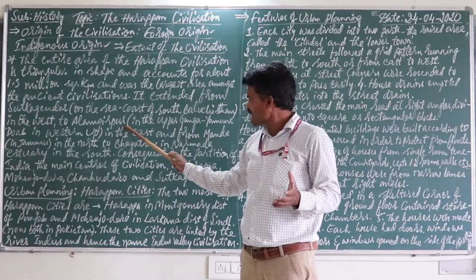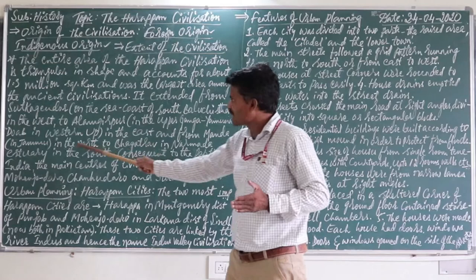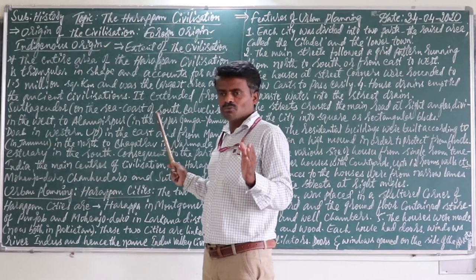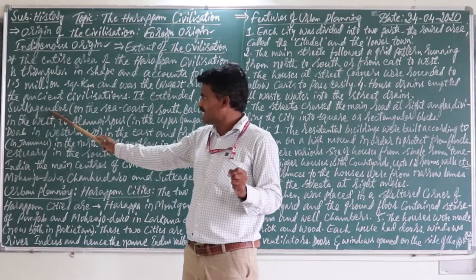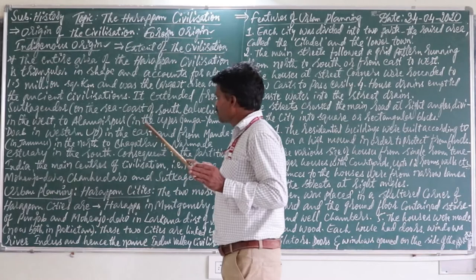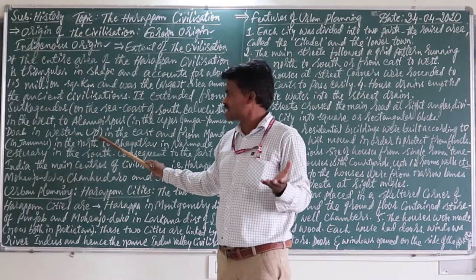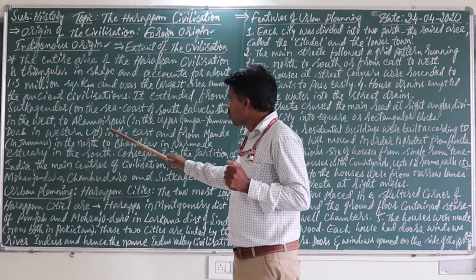Alamgirpur is located in the upper Ganga-Yamuna Doab. Doab means the meeting point of two rivers — where two rivers join, that place is called a doab. So the civilization extends to India also. Surkagendor is not easy to pronounce — you need to be careful when writing it. Surkagendor is located on the sea coast of south Balochistan in the west, and Alamgirpur is in the upper Ganga-Yamuna Doab in western Uttar Pradesh in the east.